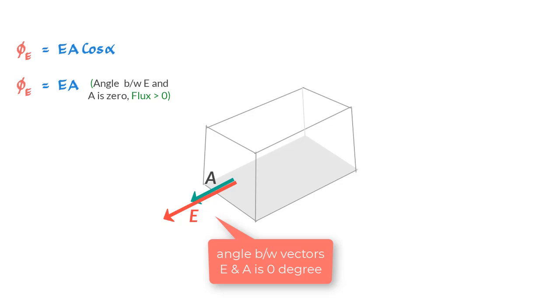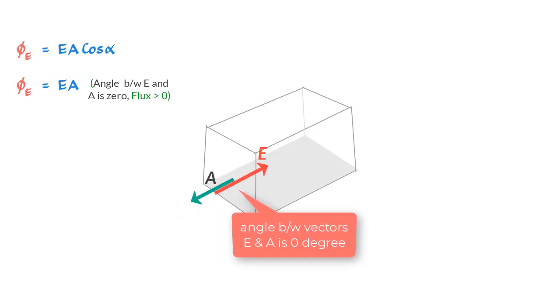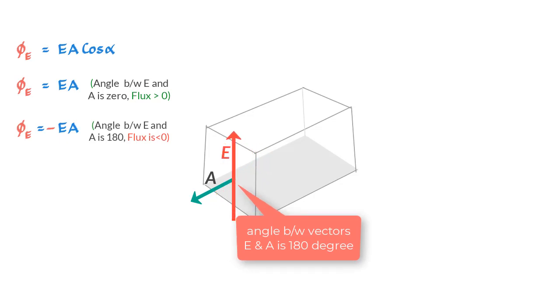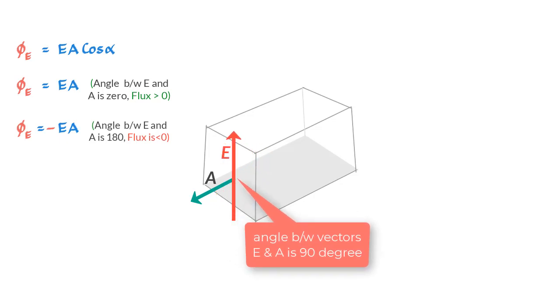However, if the field vector is piercing the surface inwards, the angle between the area vector and the field vector is 180 degrees, which would make cos alpha equal to minus one and therefore the flux becomes negative.